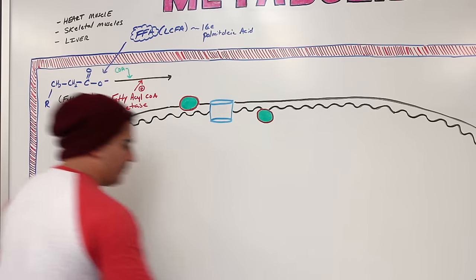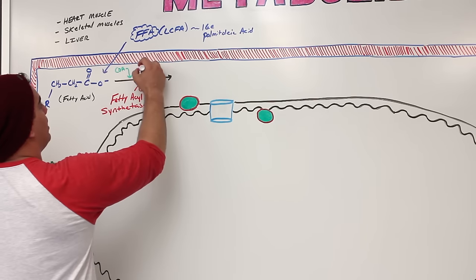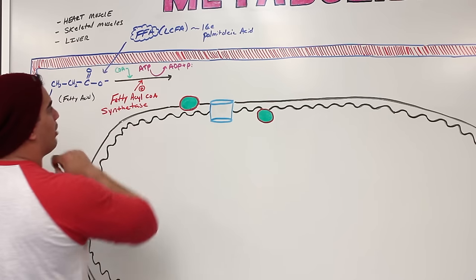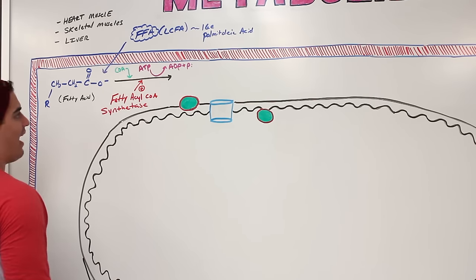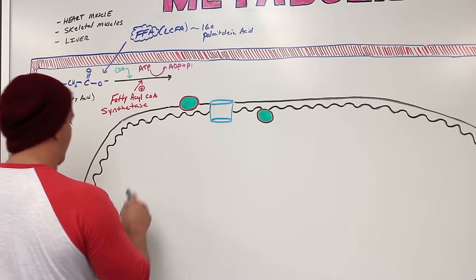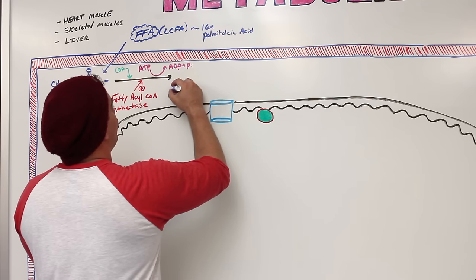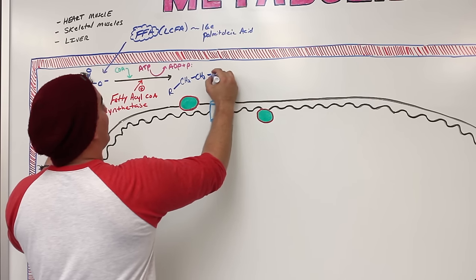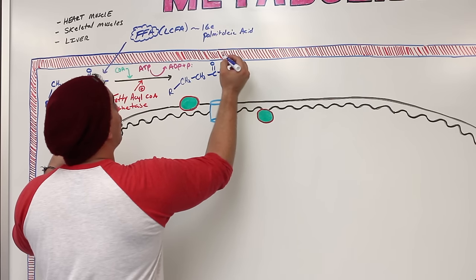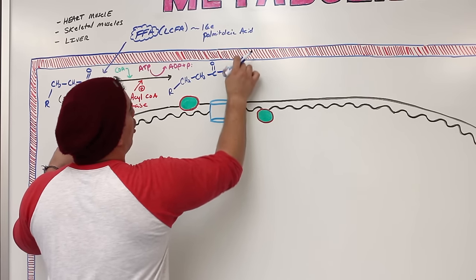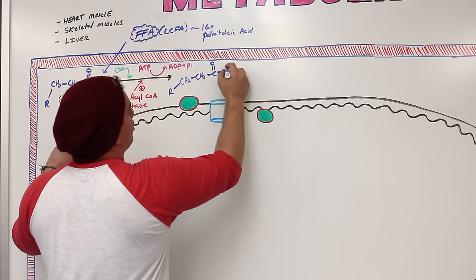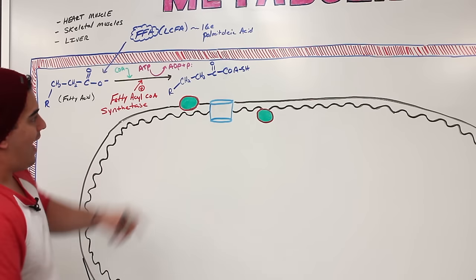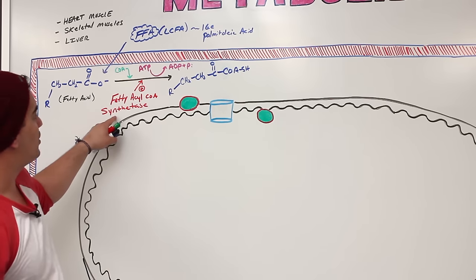To add the CoA, we break down ATP into ADP and inorganic phosphate, releasing energy from the broken bonds. This adds the CoA onto the fatty acid. The resulting product has the R group, the CH₂-CH₂ chain, the carboxyl group, and a coenzyme A bound to it via a thiol group.